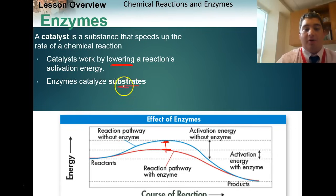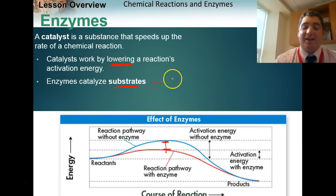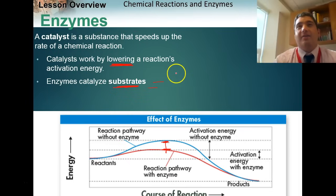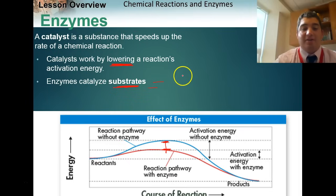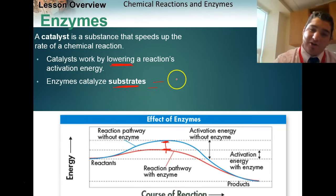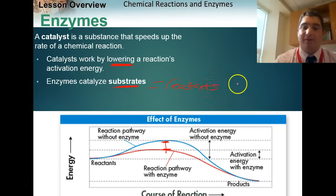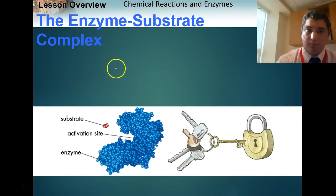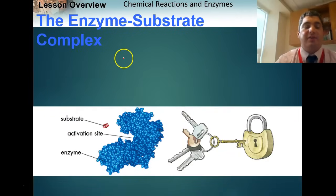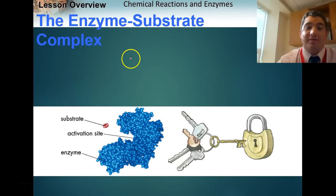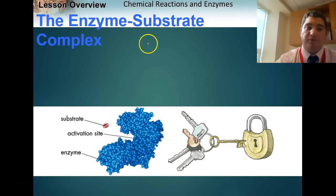Enzymes lower the amount of energy required to start a reaction. When enzymes catalyze a reaction, the things they start with are called substrates. A substrate is the substance that an enzyme brings together and catalyzes — essentially the reactants of a chemical reaction, what you start with.